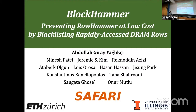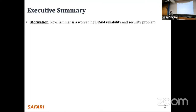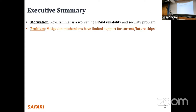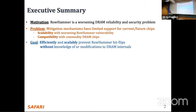Thank you for the introduction. In this work, we tackled Rowhammer again as a worsening DRAM reliability and security problem. The problem we are tackling is that mitigation mechanisms have limited support for current and future DRAM chips. This has two components: scalability with worsening Rowhammer vulnerability, and compatibility with commodity DRAM chips. Our goal is to efficiently and scalably prevent Rowhammer bitflips without knowledge of or modifications to DRAM internals.